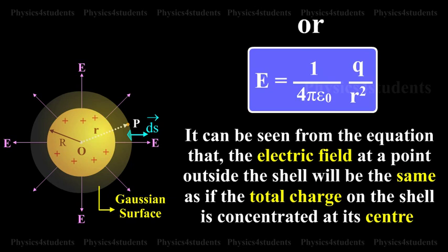It can be seen from the equation that the electric field at a point outside the shell will be the same as if the total charge on the shell is concentrated at the center.